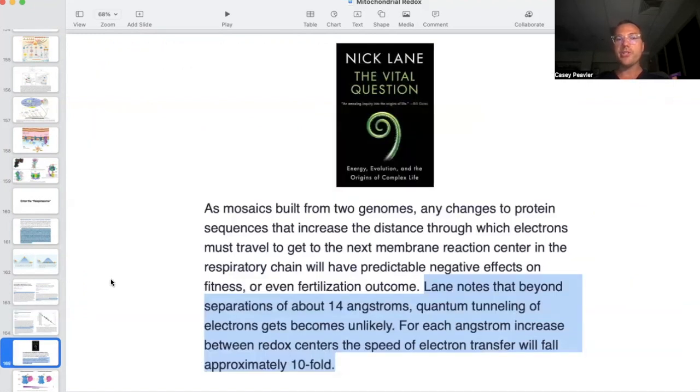As some of you have heard before, Dr. Nick Lane, in The Vital Question, says: as mosaics built from two genomes, any changes in protein sequences that increase the distance which electrons must travel to get to the next membrane reaction center in the respiratory chain will have predictable negative effects on fitness or even fertilization outcome. Lane notes that beyond separations of about 14 angstroms, quantum tunneling of electrons becomes unlikely. For each angstrom increase between redox centers, the speed of electron transfer will fall approximately 10 fold.